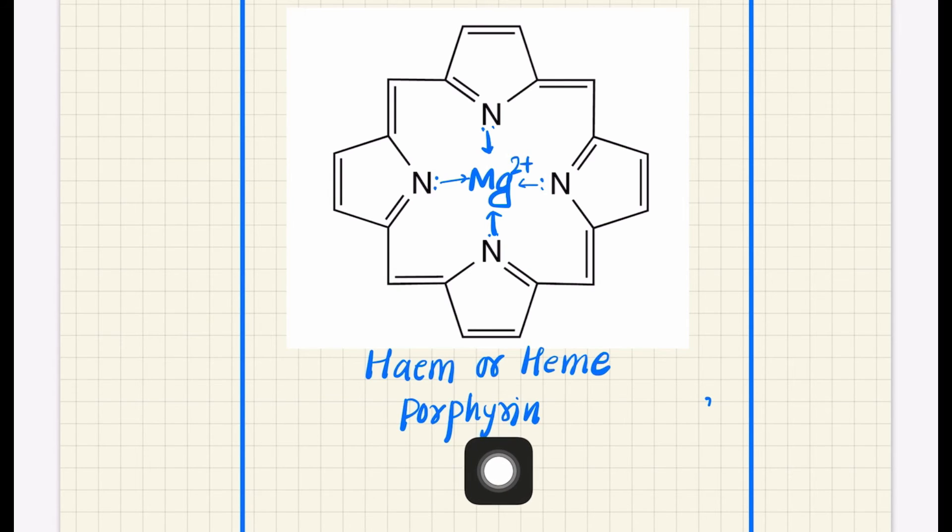So this heme ring, or we can say porphyrin, acting as a polydentate ligand. When we mix the solution of these two, a color is formed, and this color is arising due to charge transfer band, and better to say it is due to metal to ligand charge transfer, MLCT.